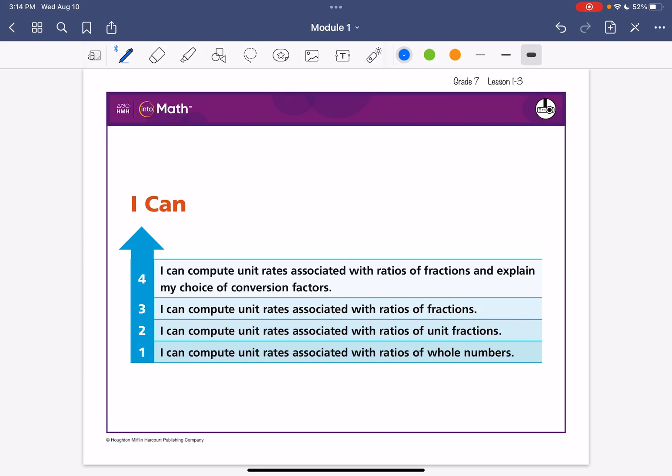Hello lovelies, we are going to be covering grade 7 lesson 1-3. Today's I can statement is that I can compute unit rates associated with ratios of fractions. So just like we've done in the previous two lessons, except for whole numbers, we will have fractions.